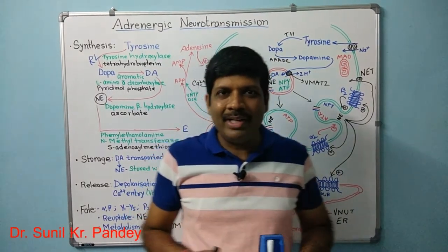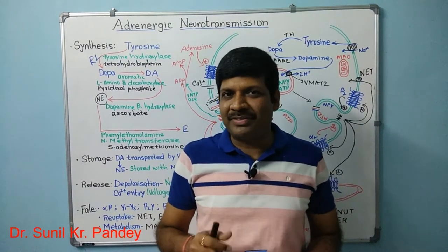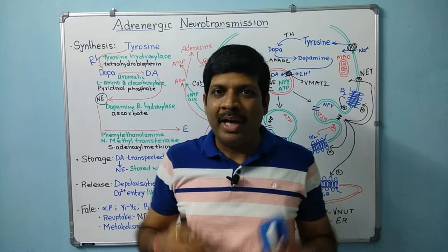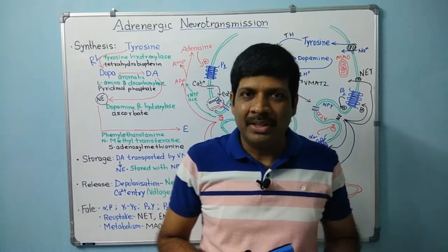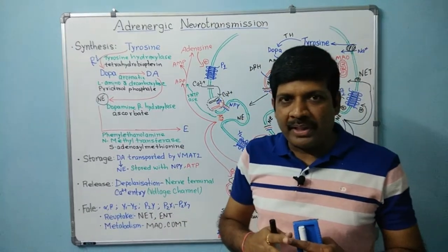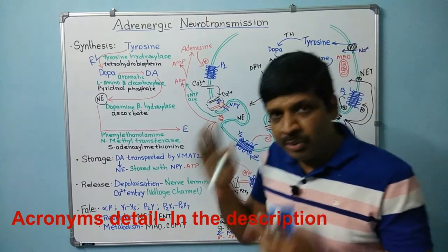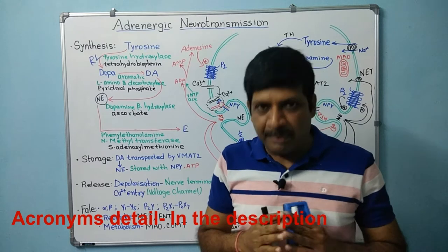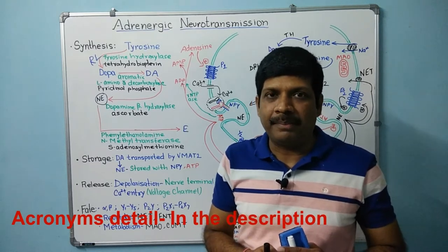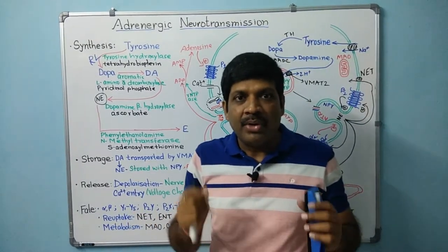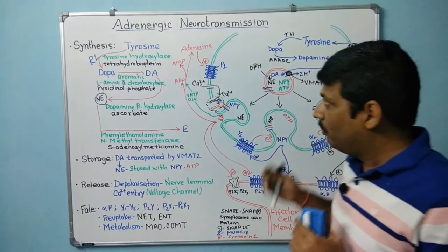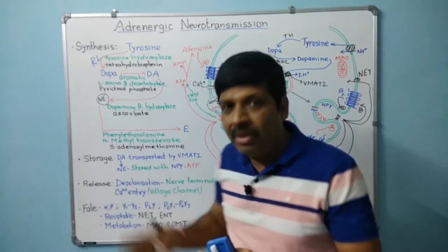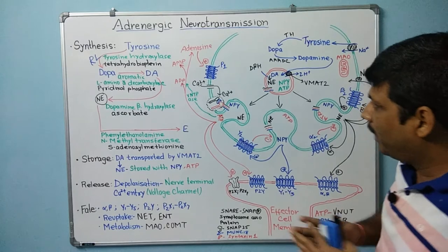Hello everyone. In today's video I will explain adrenergic neurotransmission. The board behind me is full with complex figures and text, but don't worry — I'm here to explain and make it as easy as possible. The topic is adrenergic neurotransmission, which involves the transmission of nerve impulses through adrenergic neurotransmitters. I'll cover the different steps: synthesis, storage, release, and the fate of the neurotransmitter, explained with figures and text.